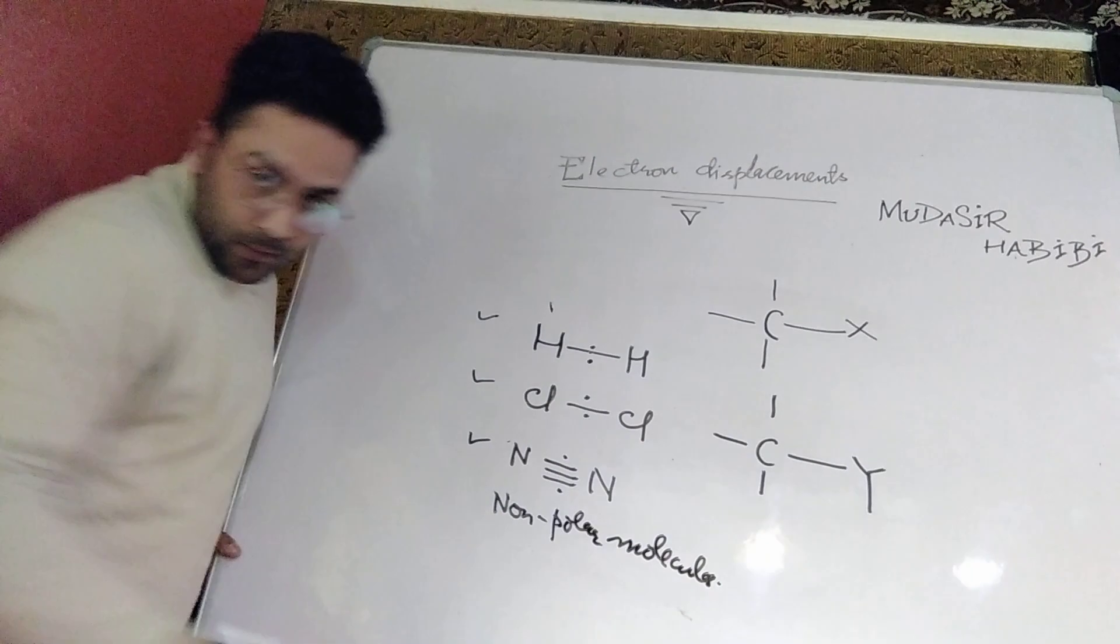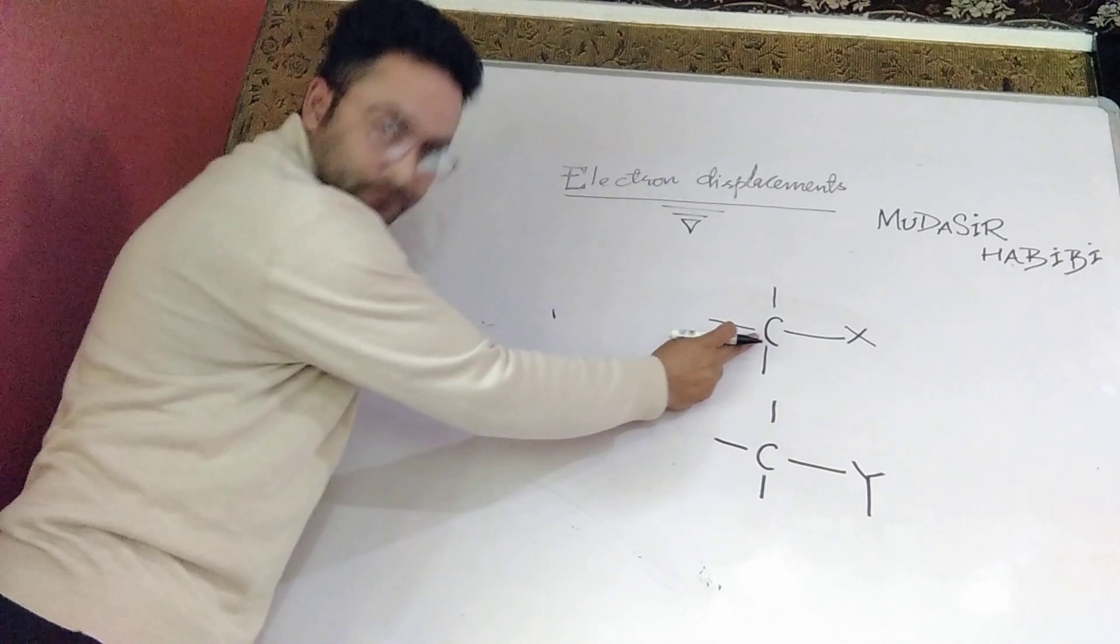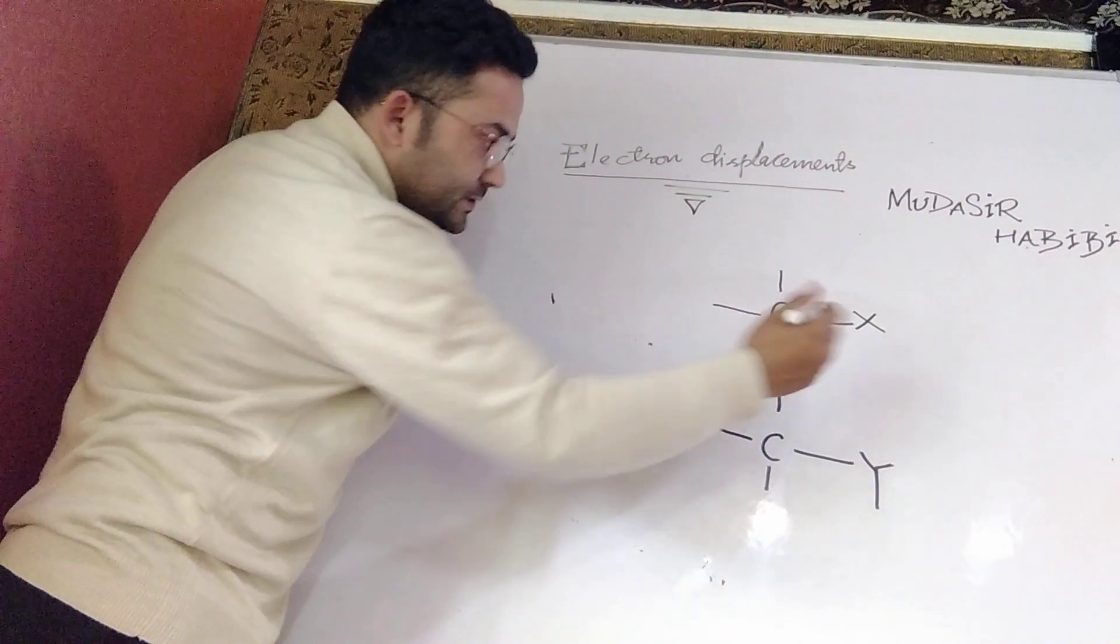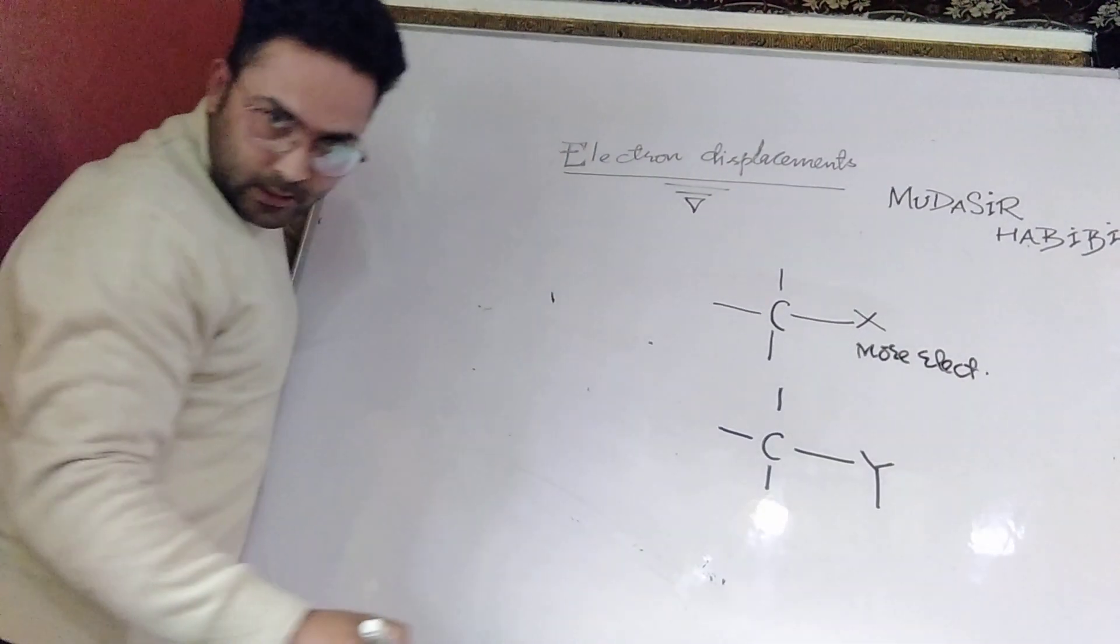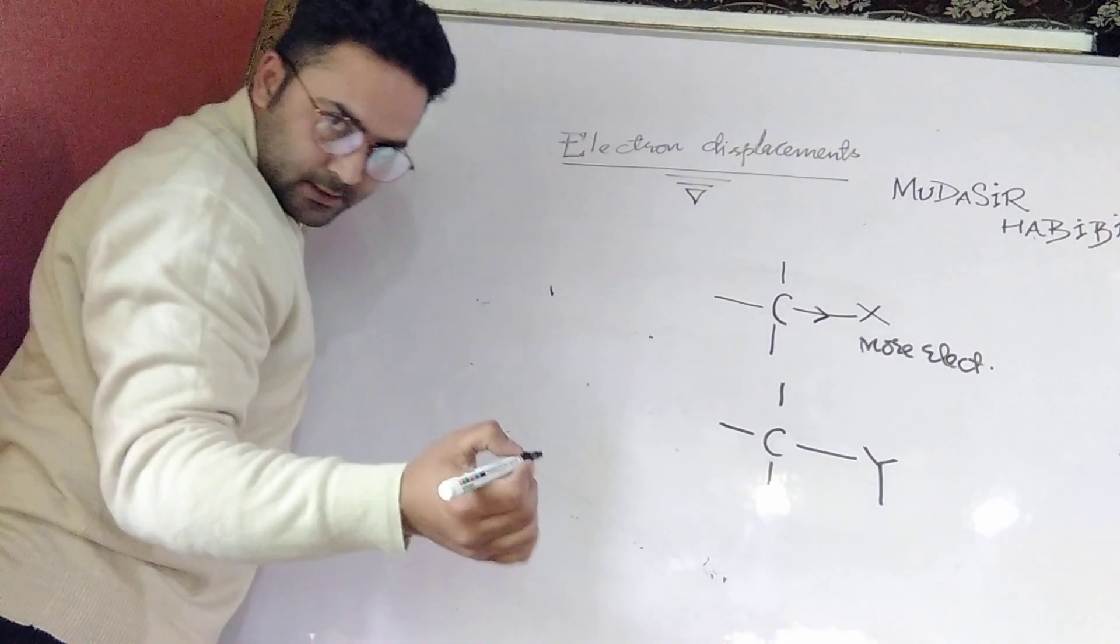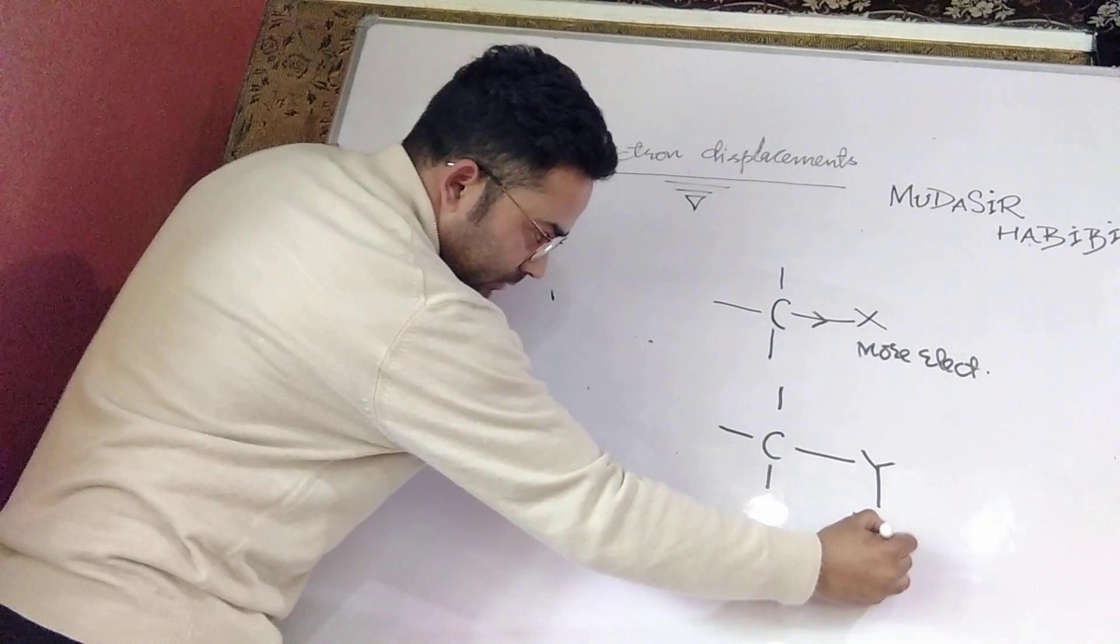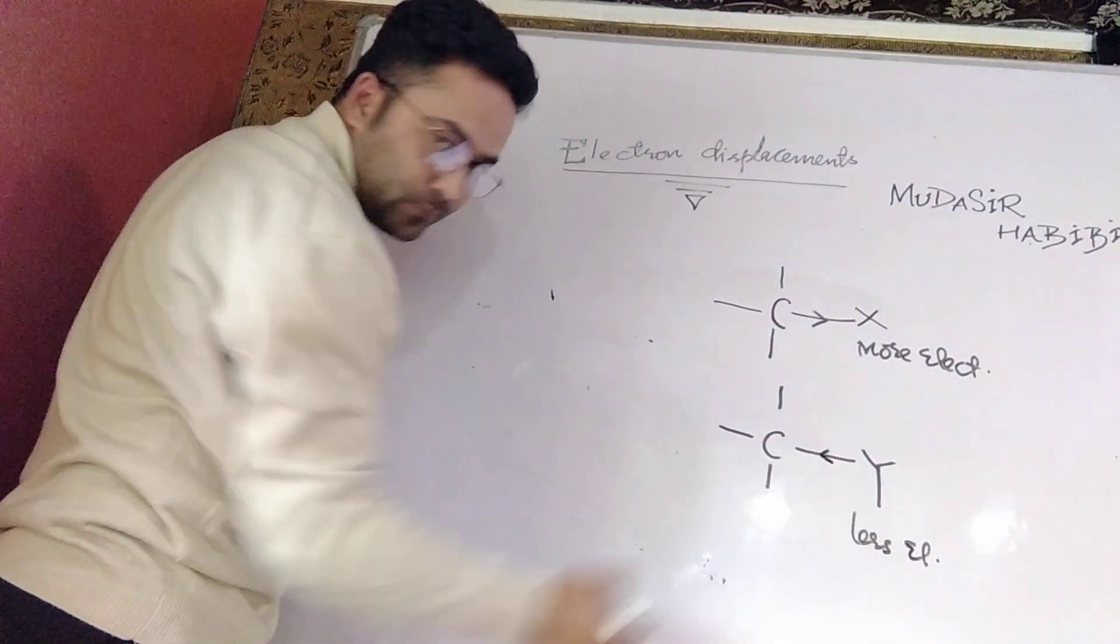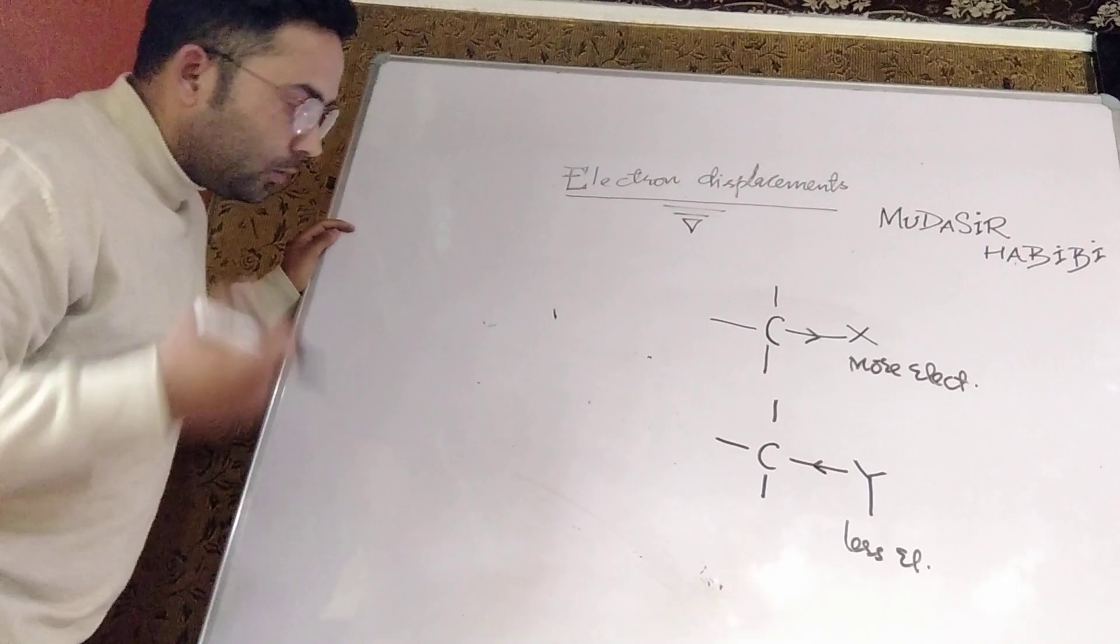However, instead of that, if we take another example like the CX bond, where carbon has bonded with X, suppose if X is more electronegative than carbon, what will happen? This X will withdraw the bond pair of electrons towards itself. Or we can say, if there is atom Y linked with carbon and if Y is less electronegative than carbon, then carbon will take the electrons away from Y, or we can say electrons are moving away from Y atom.